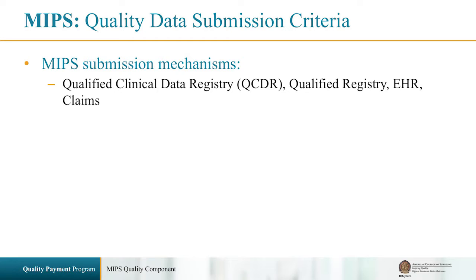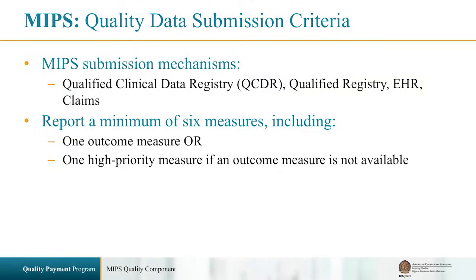Although this presentation focuses on individual providers, please note that CMS has maintained the web interface and CAPS for MIPS for group reporting options. In order to potentially earn the full 60% of the quality score, providers will need to report on a minimum of six measures, including one outcome measure or a high-priority measure if an outcome measure is not available.